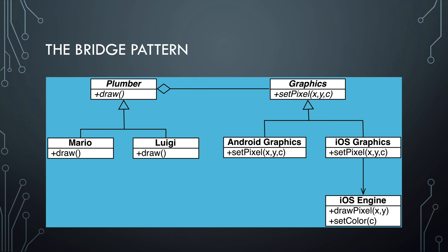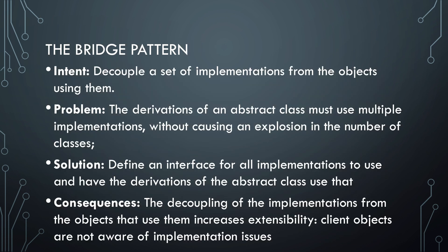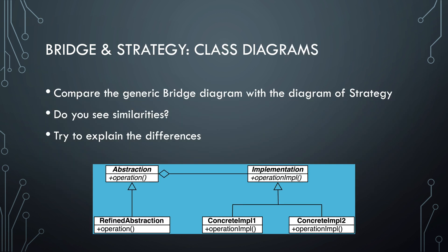How well does this separation work? As you can see, the only connection happens on the abstract level between plumber and graphics. The implementations are completely separate. So overall, this is the problem that the bridge pattern solves, and here you can also read about related consequences. This is a more generic representation of the bridge pattern — how it's structured and how it works. Now as an exercise, compare the bridge and strategy diagrams. What are the similarities and what are the differences? A bridge pattern is basically two strategies, but there is one extra feature: the strategies are connected to each other, and they're only connected on one level, which is the abstract level.